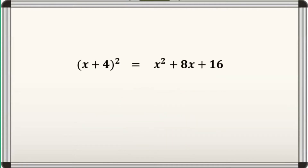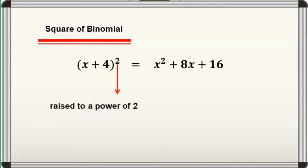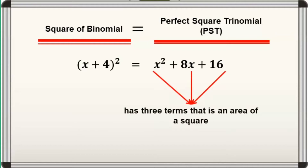In the given equation, the left side expression is called a square of binomial because, obviously, it is a binomial — a polynomial with two terms — that is being squared or raised to a power of 2. Whereas, the right side expression is called a perfect square trinomial since it has three terms and at the same time, it's an area of a square.